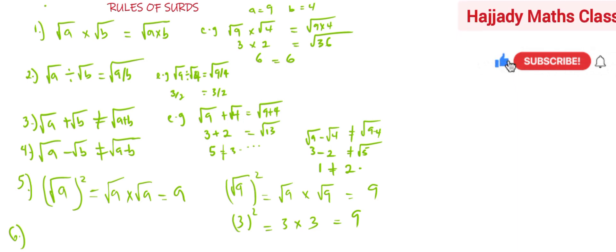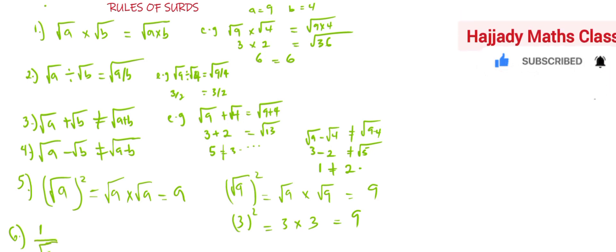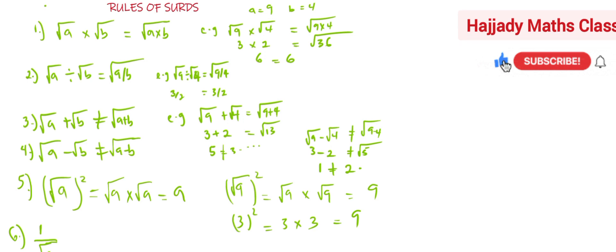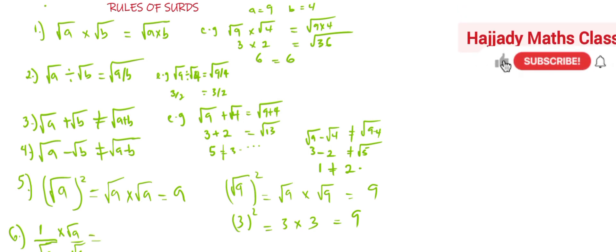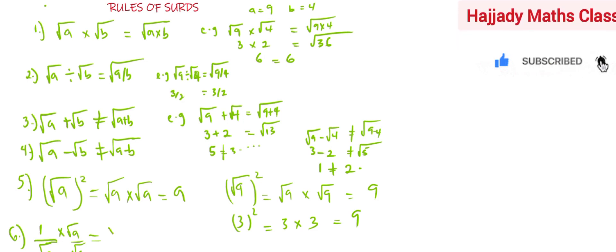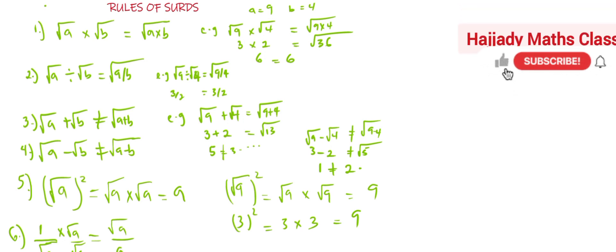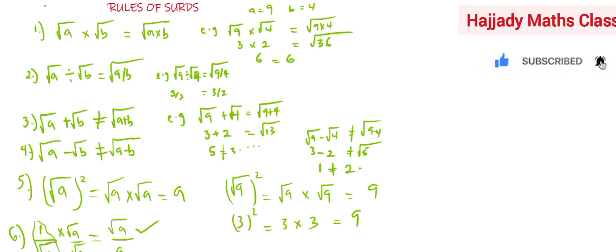Rule number six involves rationalization. One of the purposes of learning S.O.D. is that we don't want roots as the denominator. When you have 1 over root A, you multiply both the numerator and denominator by root A. So 1 times root A gives root A, and root A times root A — from rule five — gives A. Therefore, 1/√A = √A/A.